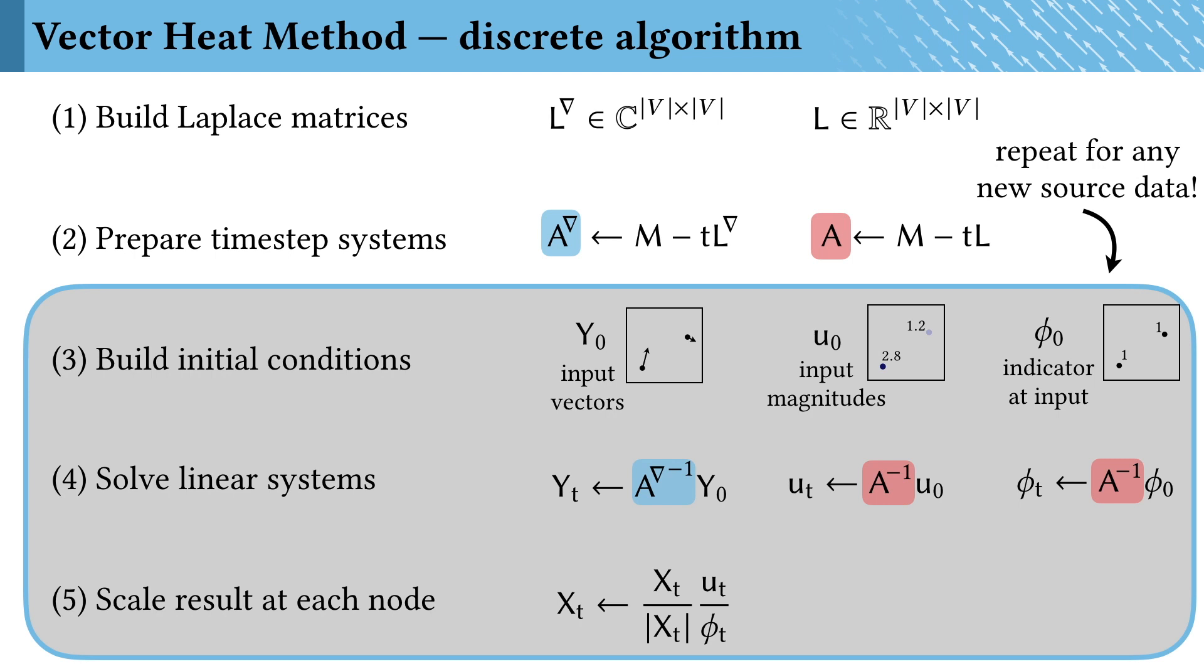The kind of amazing thing here is that for any new source data, we just need to repeat these last three steps, even if the source locations are changing. Because these are prefactored linear systems and pointwise operations, this ends up being super fast.